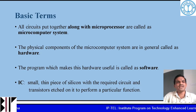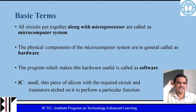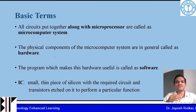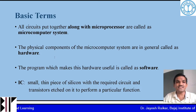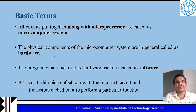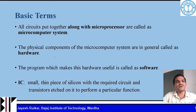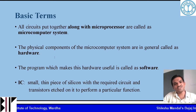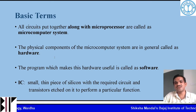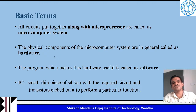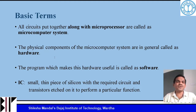Next term is IC, which stands for integrated circuit. The chip is a small thin piece of silicon with the required circuit and transistors etched on it to perform a particular function. A simple processor can consist of a few thousands of transistors, while a Pentium processor comes with millions of transistors etched on a silicon base.